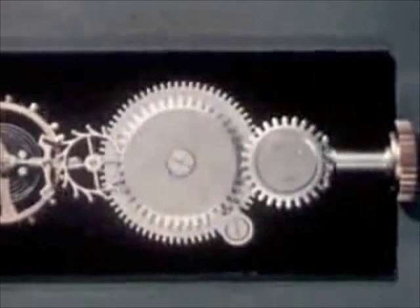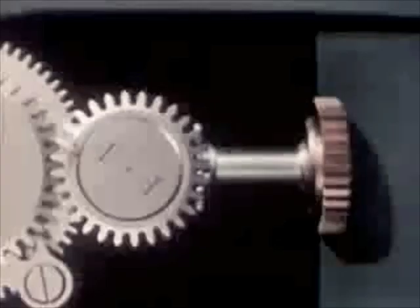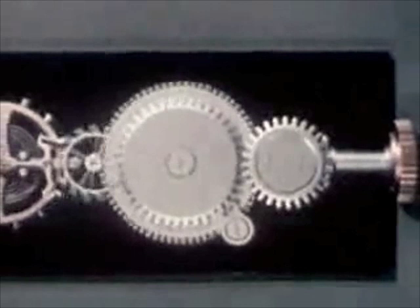Now we'll use the energy stored up in our mainspring to drive the escape wheel. As the mainspring uncoils, it causes the barrel to rotate with it. That didn't last long, did it? Let's try it again. Once things get started, there's nothing to stop them.